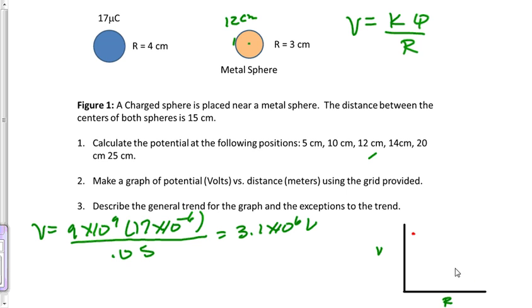I'm just going to do a generalized sketch here. We're going to notice that the graph does curve downwards, the first position, second position, third position. This is our position right here.